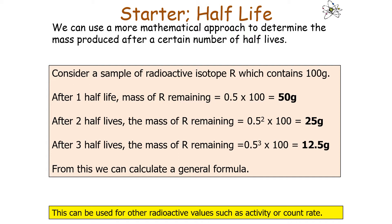Consider a sample of radioactive isotope R containing 100 grams. After one half-life, the mass remaining is 50 grams (half of 100). After two half-lives it is 25 grams — which is 0.5 to the power of 2 multiplied by the initial value of 100.